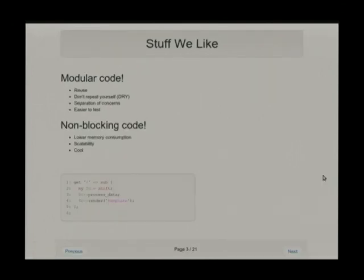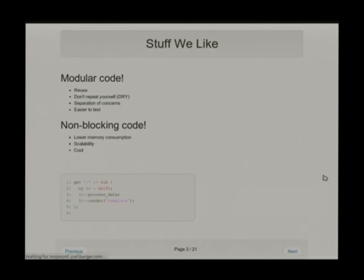We also like non-blocking code because it has lower memory consumption — we have fewer servers that way. It's more scalable, and it's just plain cool. And Mojolicious gives it to us, which is nice. So your controller classes are often pretty simple methods: you shift off the controller, call some methods to process the data, and you render. No big deal.